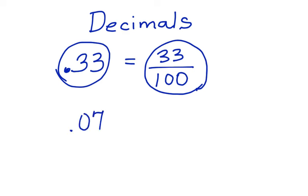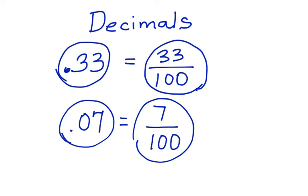What about if I have 0.07? Again, that could be 7 out of 100. These would both be rational numbers.